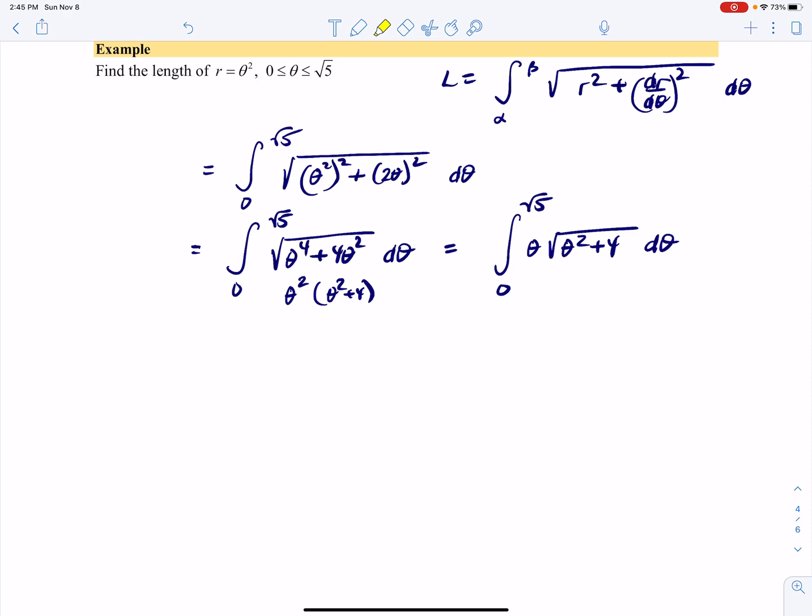Now, hopefully it looks familiar—it looks like a u-substitution. Let u = θ² + 4, then du = 2θ dθ.